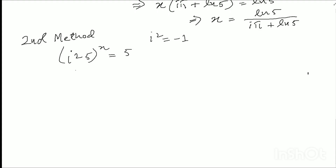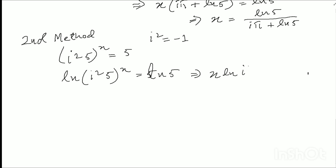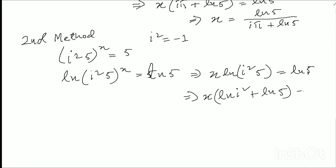Since i squared equals to minus 1, apply log on both sides. So ln of i squared times 5 to the power x equals to ln 5. Using the formula ln(ab) = ln(a) + ln(b): ln(i squared) plus x ln 5 equals to ln 5. So 2 ln i plus x ln 5 equals to ln 5, giving x equals to ln 5 divided by 2 ln i.